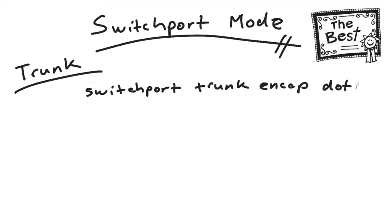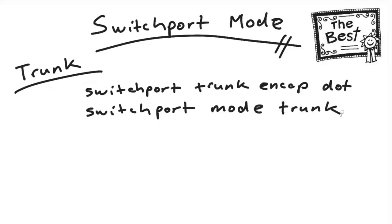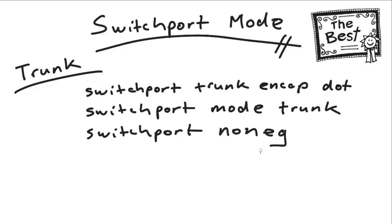On some devices we need to set the trunk encapsulation. Once we do that, the device will allow us to use the powerful command switchport mode trunk. We are setting a DTP mode of on — mode access was off, mode trunk is considered a DTP on mode. Then we say switchport nonegotiate, declaring this port is unequivocally a trunk and does not participate in Dynamic Trunk Protocol negotiation.